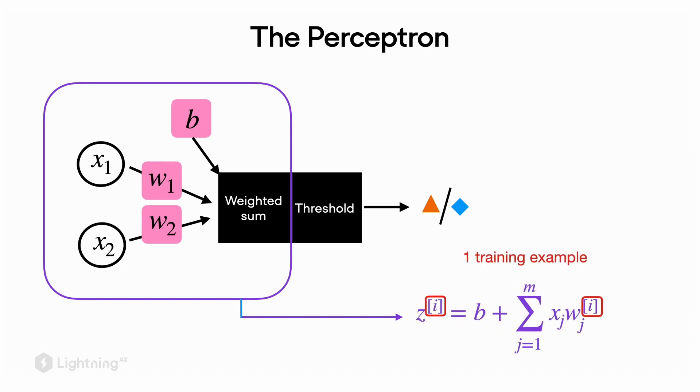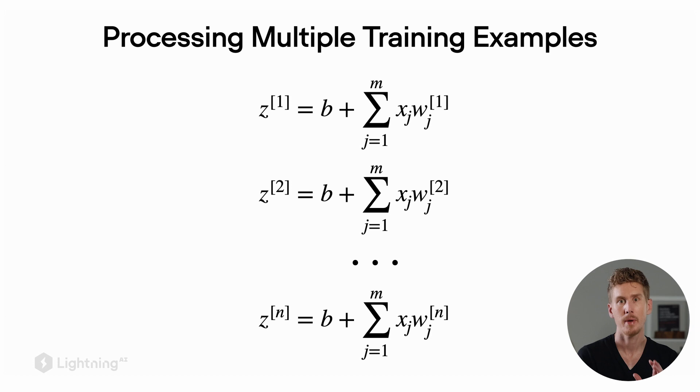We will use the superscript i here to refer to the training example index. One way we can approach this is by computing each weighted sum individually. So now we have superscript 1 to superscript n for a data set consisting of n training examples.